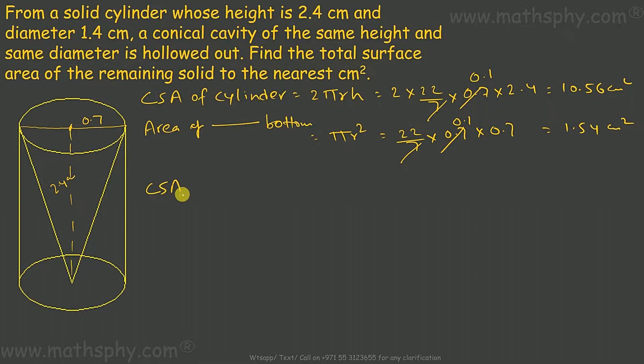Now curved surface area of cone, we need to know L. So L would be, this is a right angle triangle here, L will be hypotenuse. In place of 2.4 let's write it as 24 over 10, in place of 0.7 let's write it as 7 over 10.